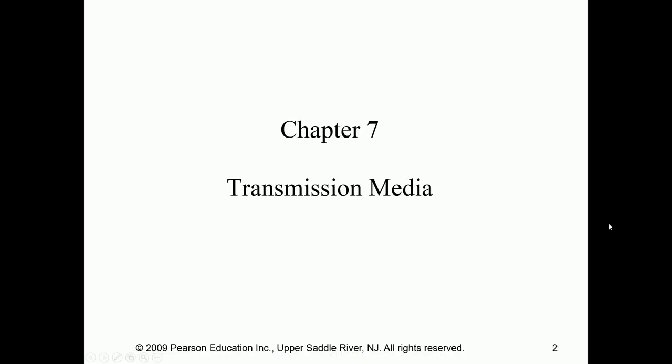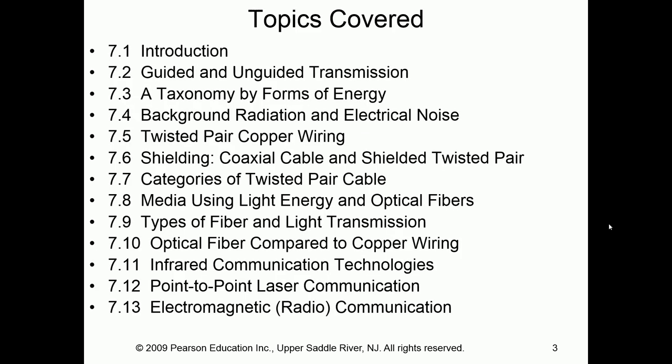Chapter 7, Transmission Media. This is actually one of those important chapters. Here we talk about guided and unguided transmission — essentially wired versus wireless. We talk about the definitions and the forms of energy, background radiation, and noise. Then we start getting more in depth between the different types of communication wiring or transmission types.